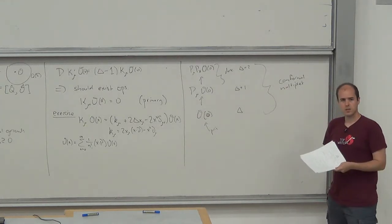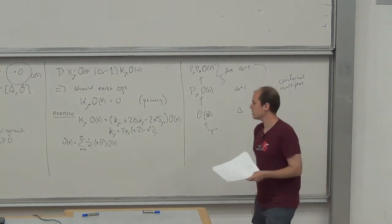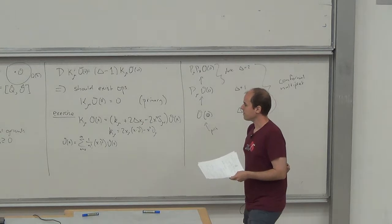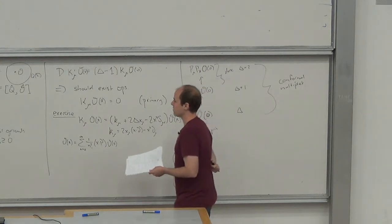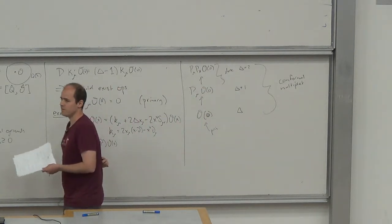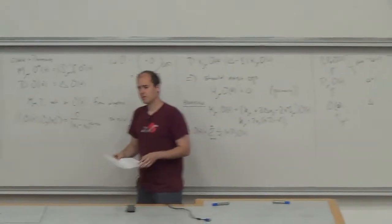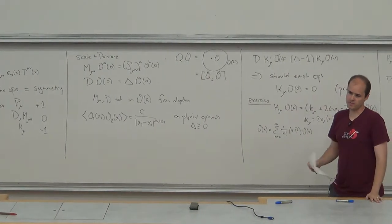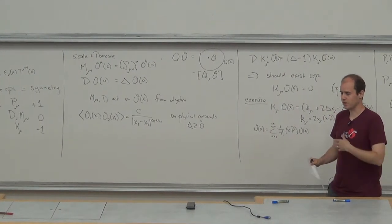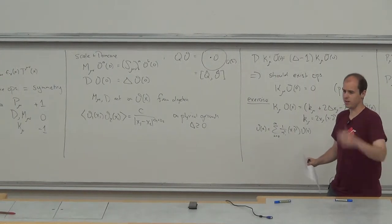Question: Would you say that O(x) has infinite dimensions? Yes — when we ask about the dimension of an operator, we mean the eigenvalue of D at the origin. O(x) is not an eigenvector of dilatation; it's a linear combination of an infinite number of eigenvectors whose eigenvalues go to infinity.